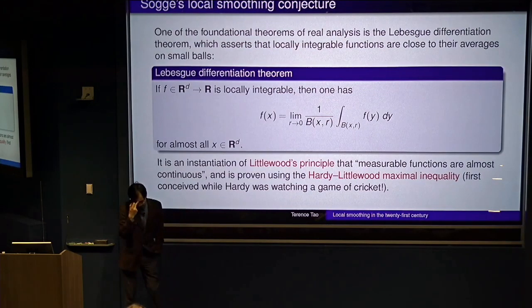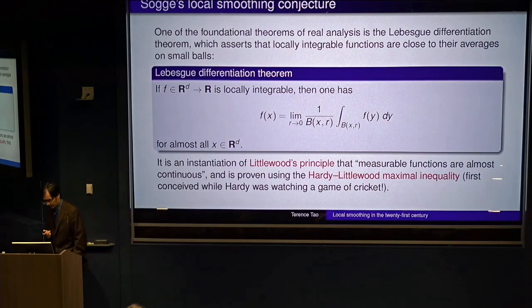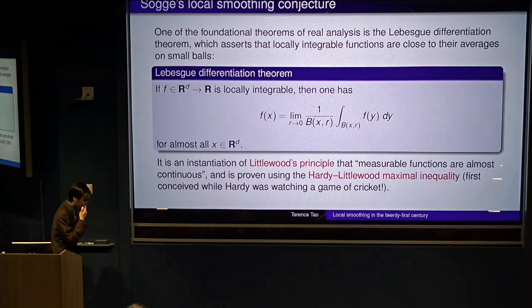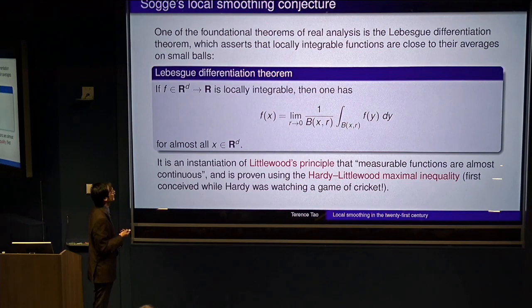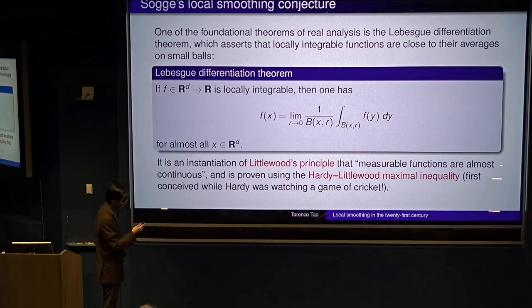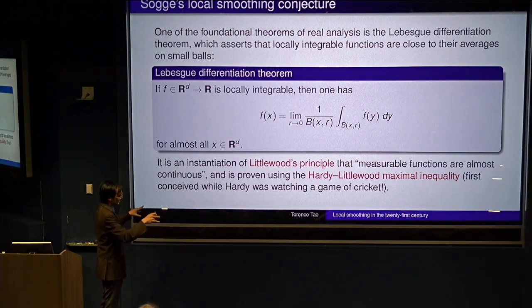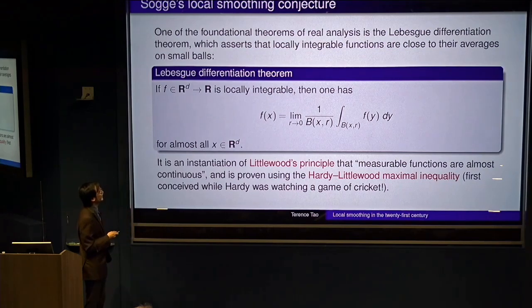But there were other estimates that people wanted, but couldn't prove. So there's something called Sogge's local smoothing conjecture, which only got solved a few years ago. So that's kind of the 21st century component. It's motivated from a theorem in analysis, which maybe I will not talk about. It's called the Lebesgue differentiation theorem. It relates a function, it tells you that a function can be approximated by local averages of that function. It's a very basic theorem in analysis.